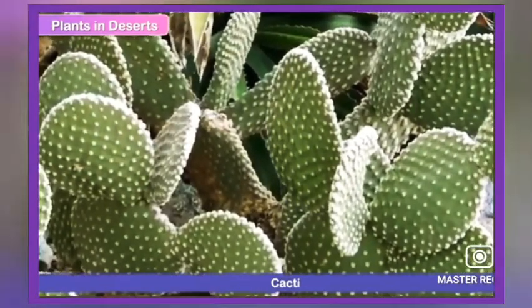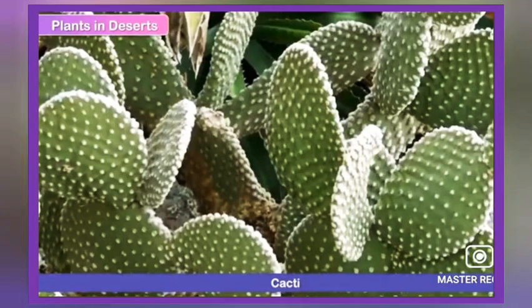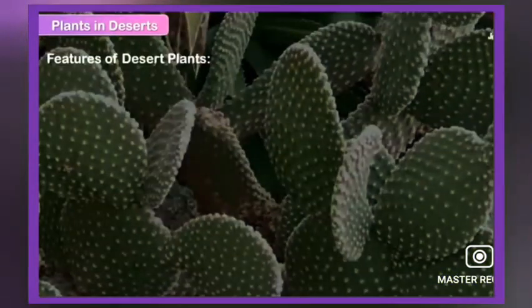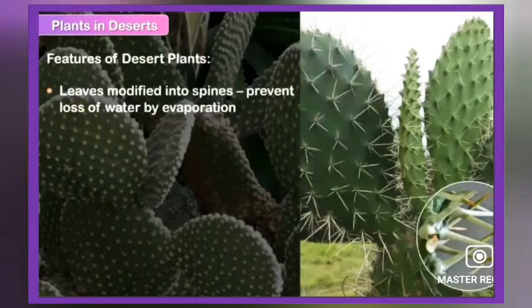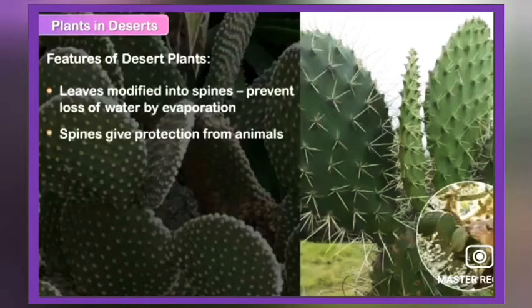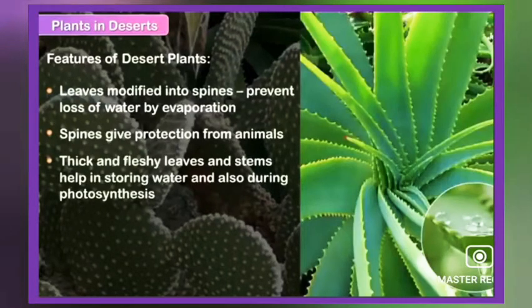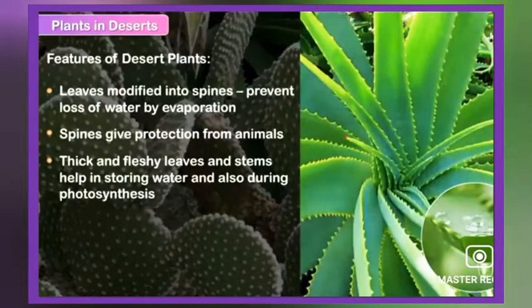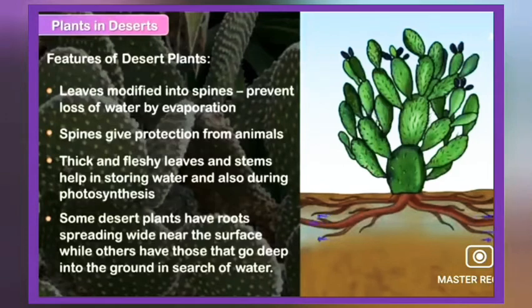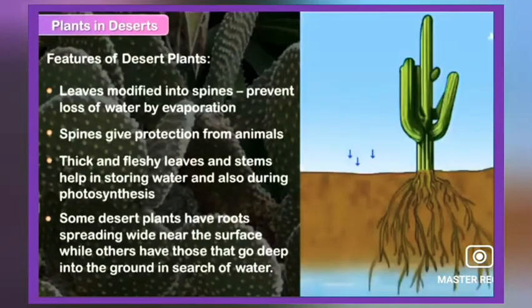Cacti are an excellent example of plants that adapt to desert climate. Some features of desert plants: the leaves are modified into spines to prevent loss of water by evaporation, and this also helps protect the plants from animals. Some desert plants have thick and fleshy leaves and stems which help them store water as well as carry out photosynthesis. Some desert plants have roots spreading wide near the surface while others have roots that go deep into the ground in search of water.